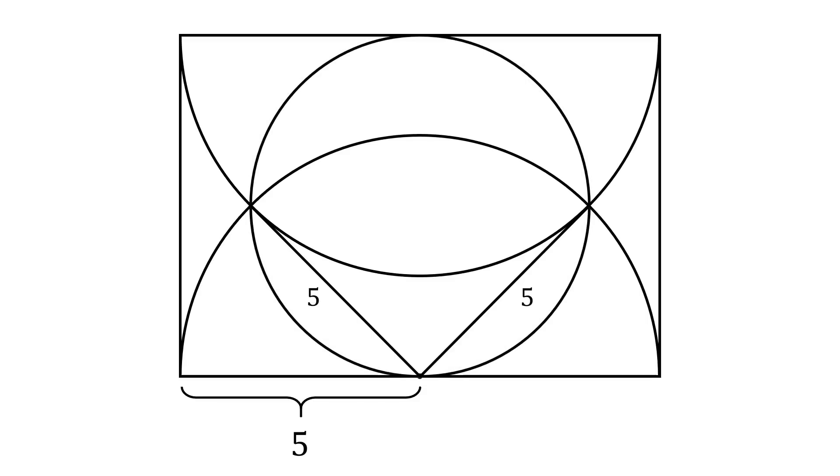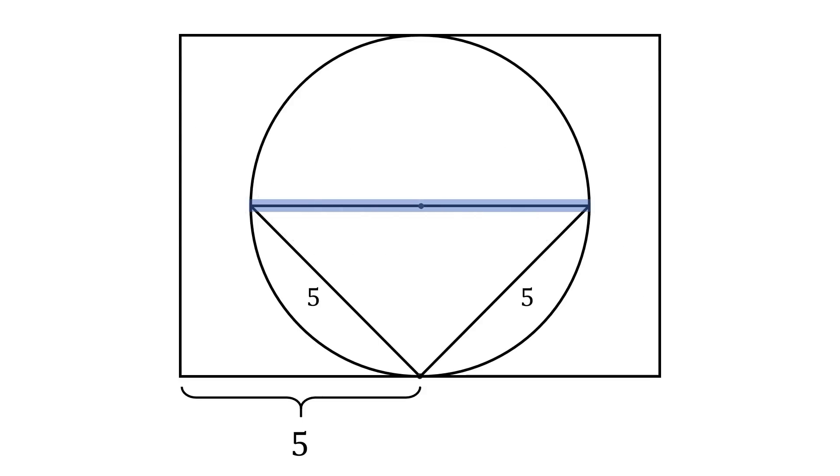Now consider the inscribed circle. We will construct a diameter of this inscribed circle. Since this is a diameter of the inscribed circle, we must have the angle that's inscribed opposite will be a 90-degree angle. Thus, we have a right triangle, where two of its legs are equal to 5.